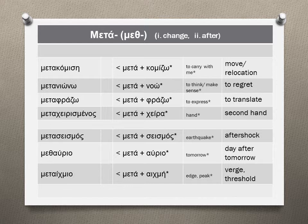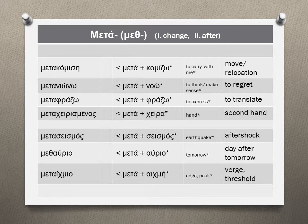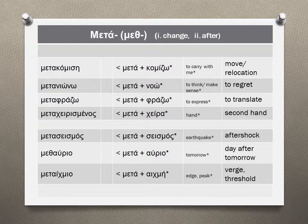The second common meaning of the META prefix is that of AFTER. METASISMOS: seismos is an earthquake, and METASISMOS is what follows the main earthquake — the aftershock. METHAVRIO should be an easy guess: the day after tomorrow, AVRIO, is METHAVRIO. The word METEHMIO comes from META and ECHMI — ECHMI means the edge, the peak. It started being used in the military to describe the distance between two camps, and nowadays means the point with exactly the same distance between two things: the verge or, metaphorically, the threshold.